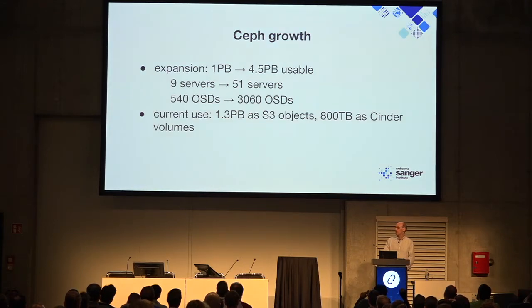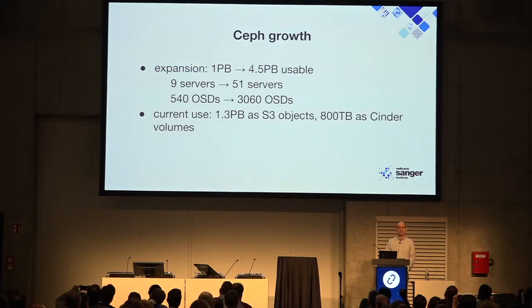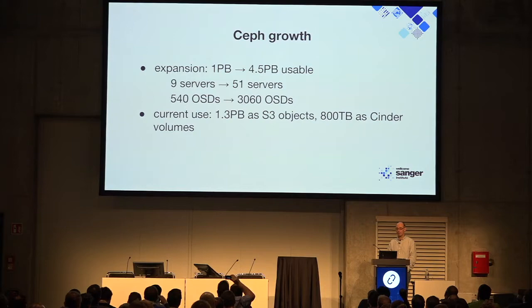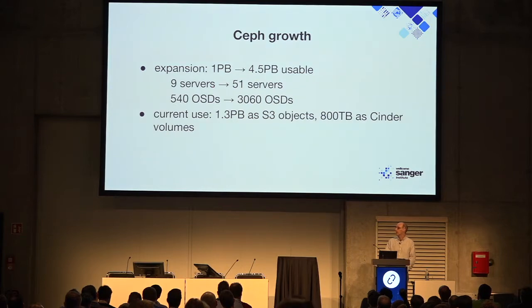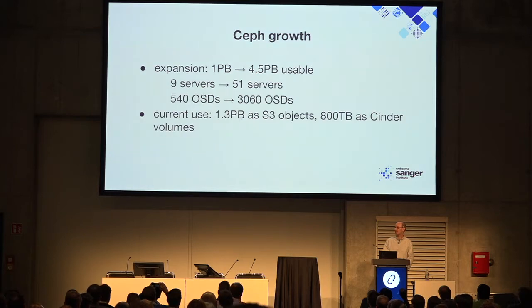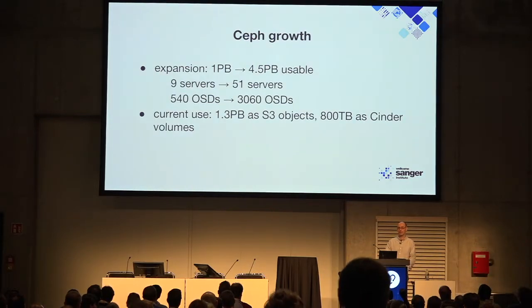In terms of Ceph growth, it went absolutely ballistic — we were really surprised. Possibly as a result of our history using iRODS — the Integrated Rule-Oriented Data Storage system — our users knew exactly what PUT and GET rather than POSIX means. So they were able to use the S3 RadosGW interface to Ceph quite happily. Currently we've got 1.3 petabytes as S3 objects and a little bit less than a petabyte as Cinder volumes. Before a recent project, probably 90% of usage was S3.